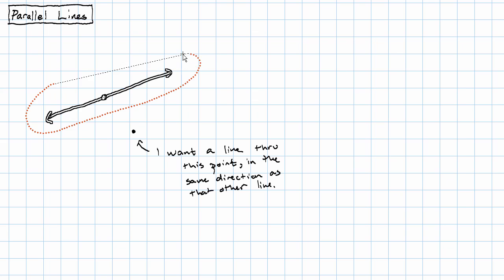Now through the magic of being on a computer, I can make that happen by copying the other line and moving it over here. These two lines now go in the same direction, because when I move them around on the computer, I don't twist them at all.